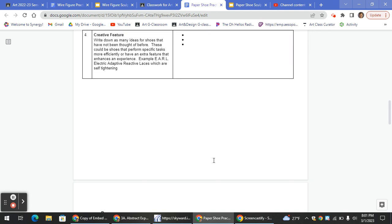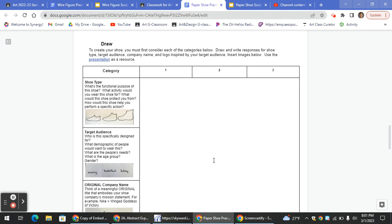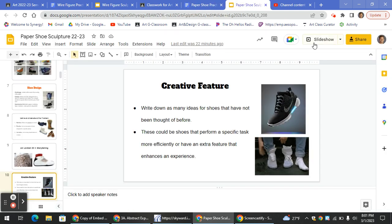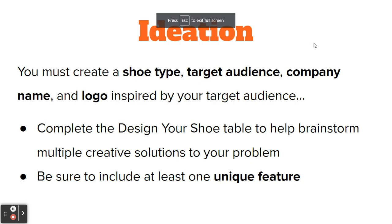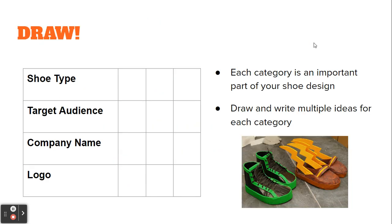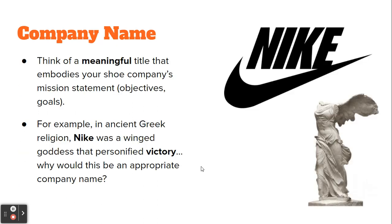Once you're done with that, you're ready to move on to page three. When you're focusing on page three, you are going to be utilizing a lot of different components and categories. So you have shoe type, target audience, company name, and logo. Here are some different examples of each of those, and we're going to be talking about those right now.